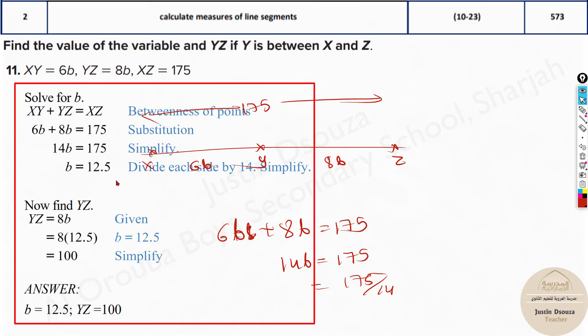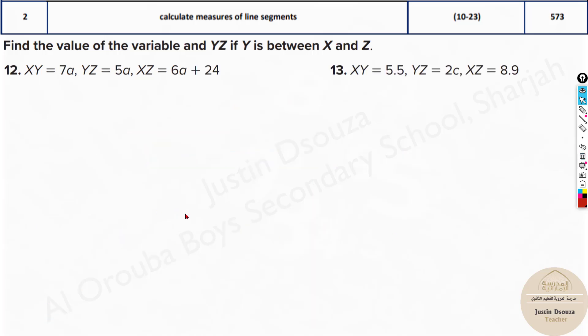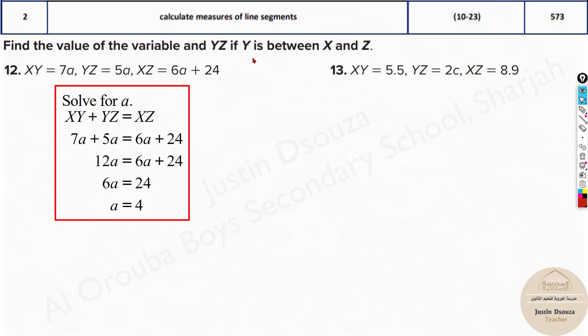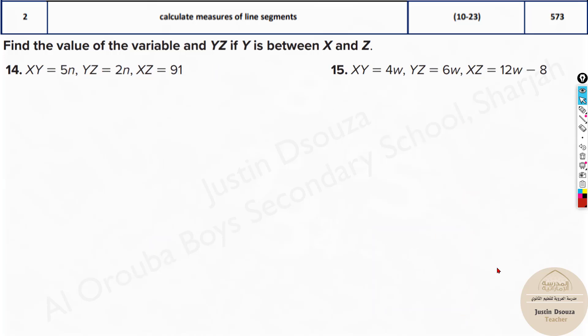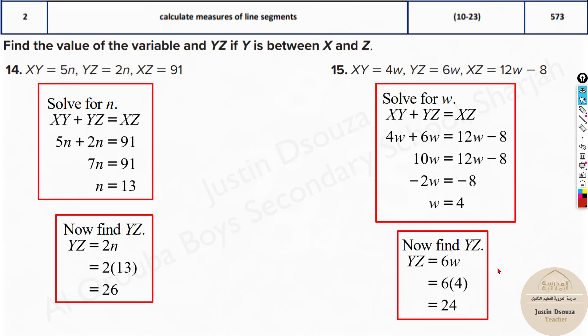Substitute the b value and solve for whichever you need. If it's YZ, 8 times 175 by 14, so that's the answer. Please do the remaining problems by yourselves. It's just that you need to know which is the midpoint. Y is in between, so XY plus YZ, 7a plus πa would be the total distance.